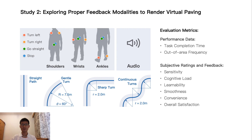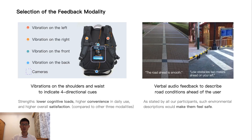Both performance data and subjective feedback were adopted as evaluation metrics. The results showed that vibrotactile feedback on the shoulders and waist outperformed the other three modalities, having lower cognitive load, higher convenience in daily use, and higher overall satisfaction. As a result, in our final feedback solution, we selected vibrations on the shoulders and waist to indicate directional cues.